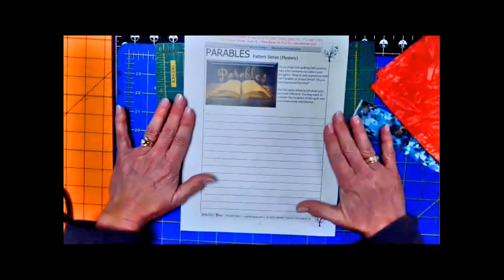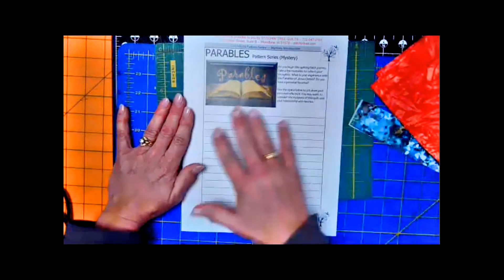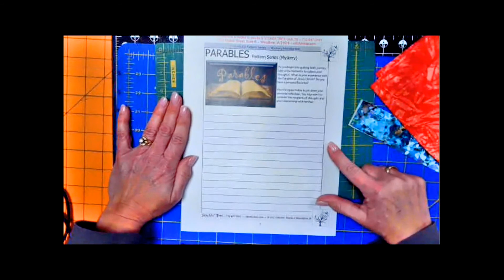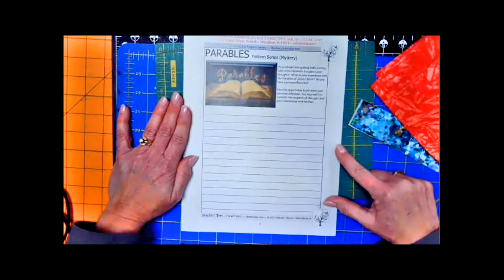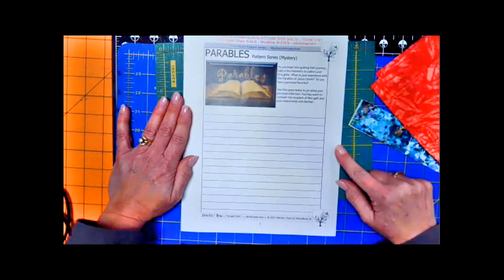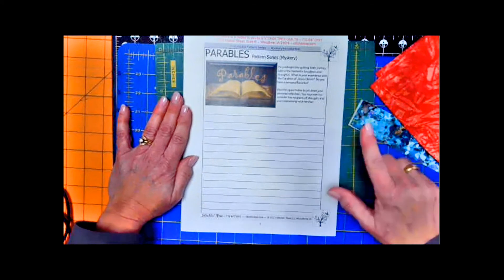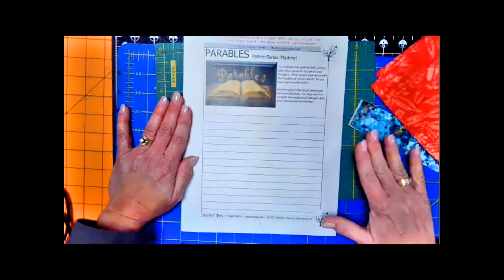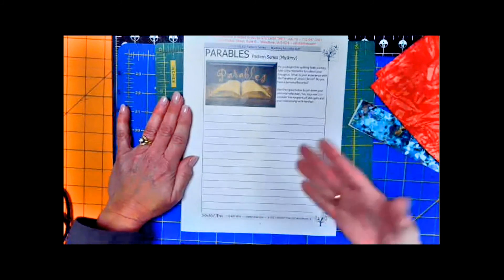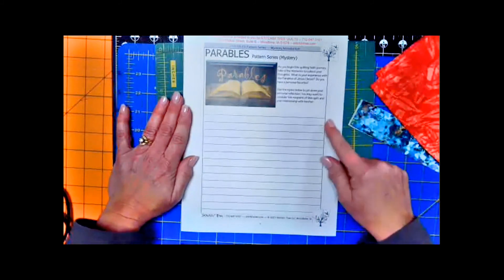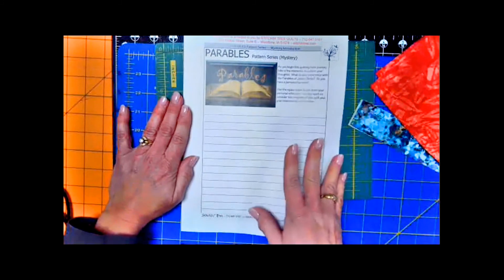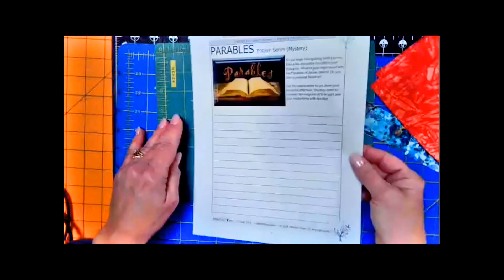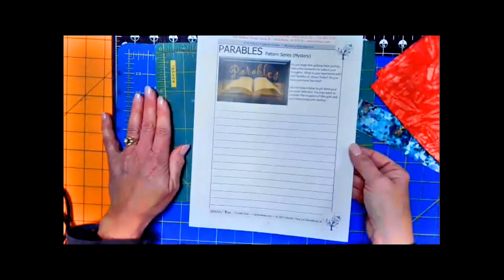Then the last page of that introduction is a place for you to write your personal reflection. And you will see that I always have a page like this on every one of the patterns that I include in the series. And this can be a place where you can write something about your faith, write something about this journey, write something about the quilt. If you're making this quilt as a gift to somebody, you might write something to them. And then you can actually give them the pages of these as you give them the quilt. So that's just a place for your personal reflection.